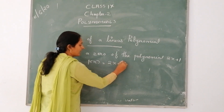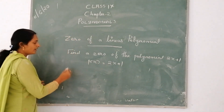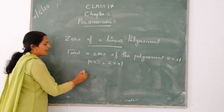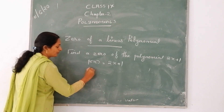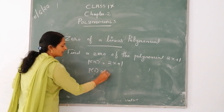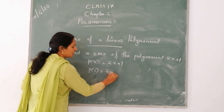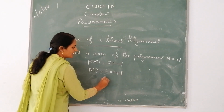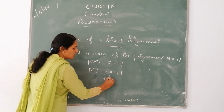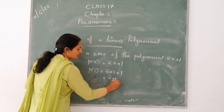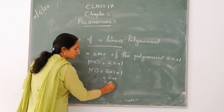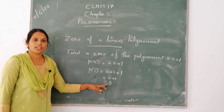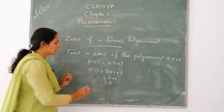We will replace x with 1. We get 2 into 1 plus 1. That is equal to 2 plus 1, equal to 3. This 3 is not equal to 0.